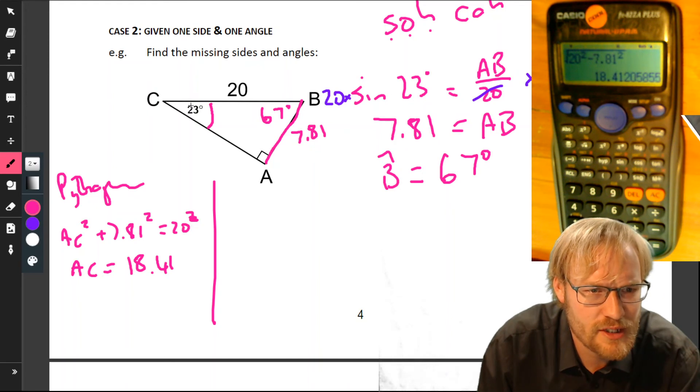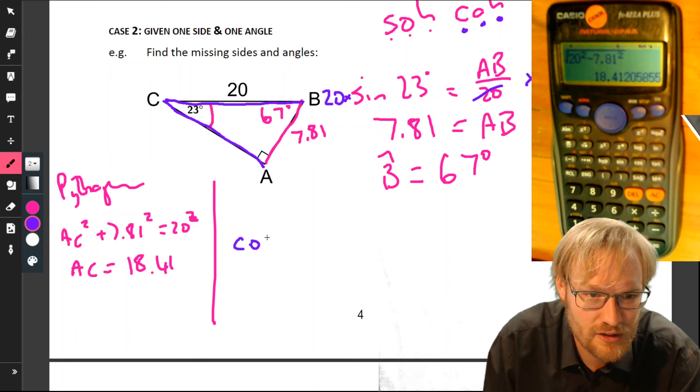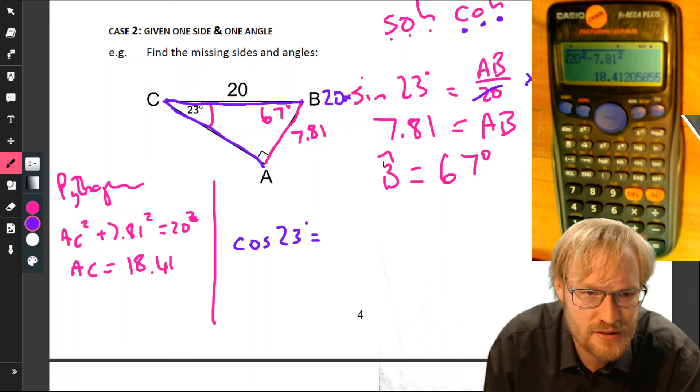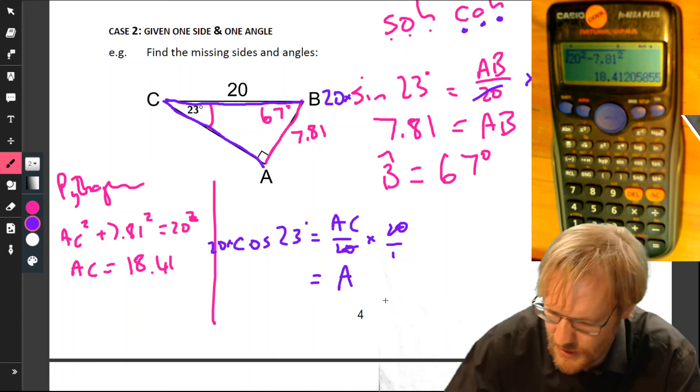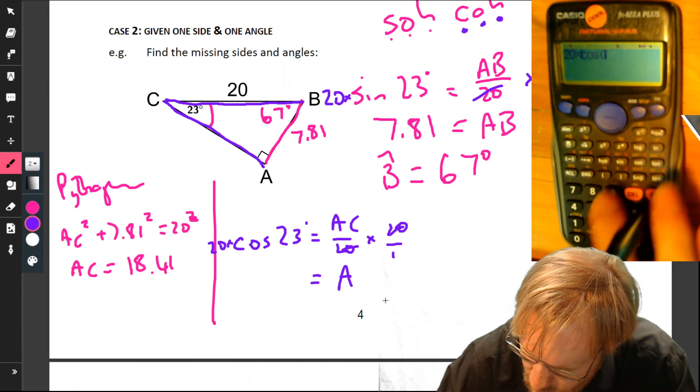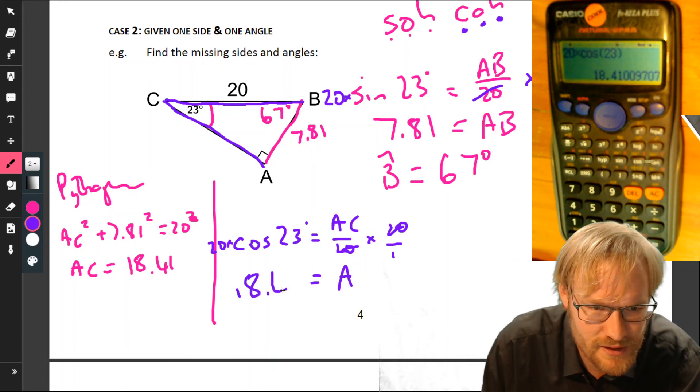Option two: why don't we use our 23 and say we've got the adjacent side and we've got the hypotenuse. Which one deals with adjacent and hypotenuse? Cos. So we could say cos 23 equals adjacent, which is AC, over 20. Times 20, those cancel, and we just get AC equals 20 times cos 23. Calculator: 20 times cos 23, equals 18.41.